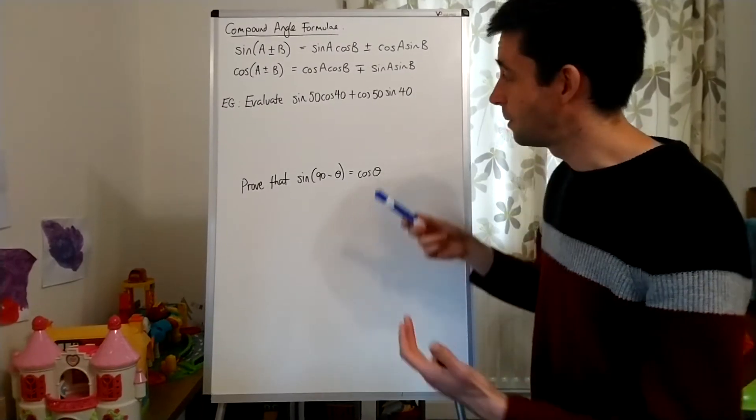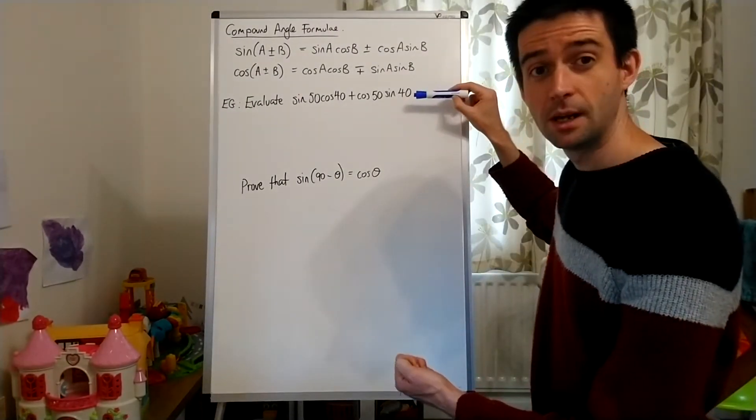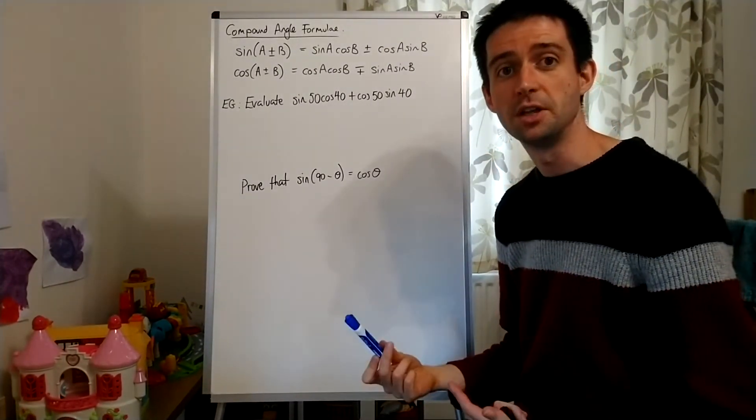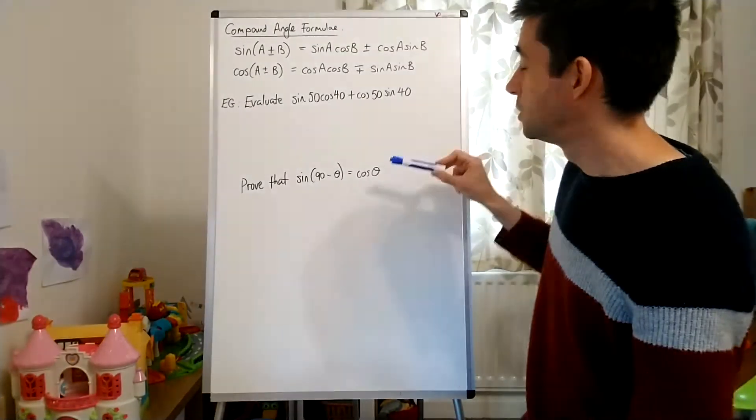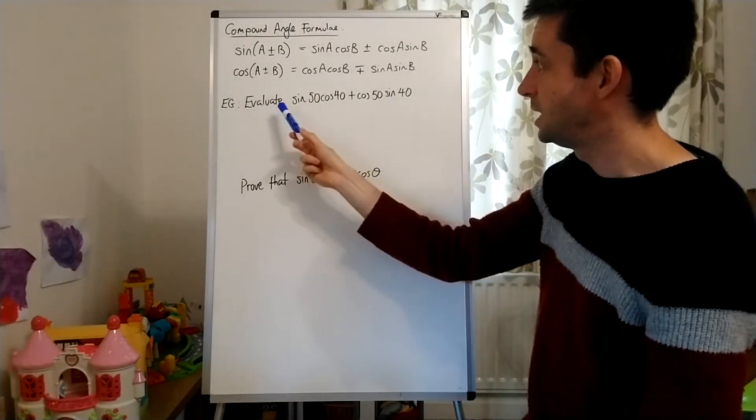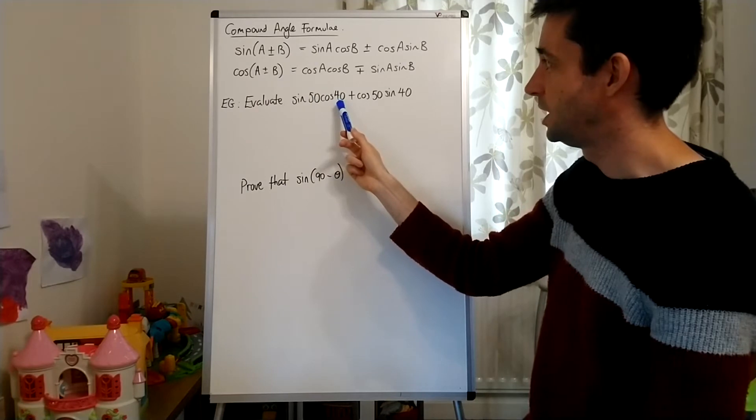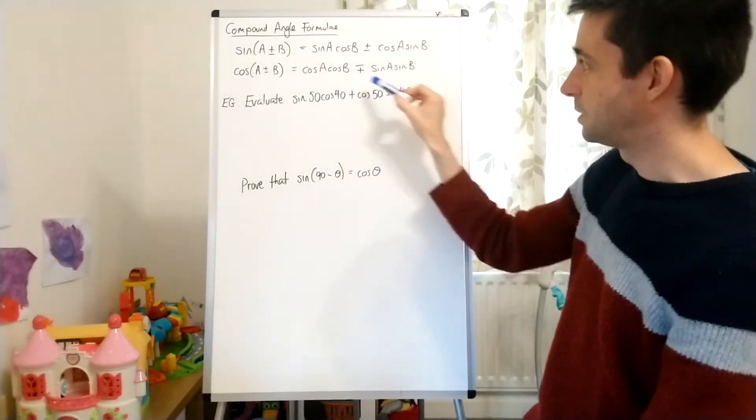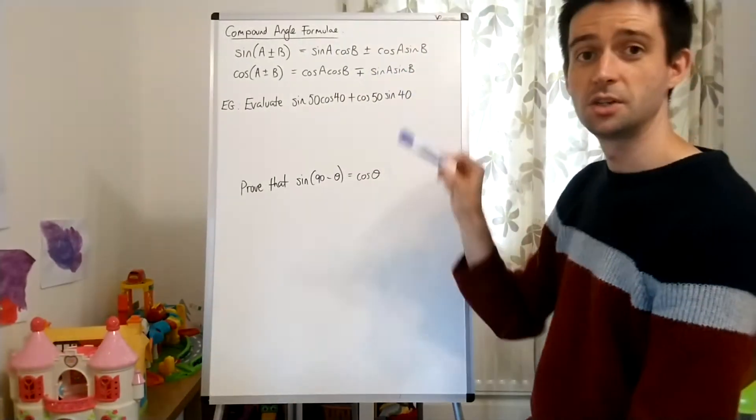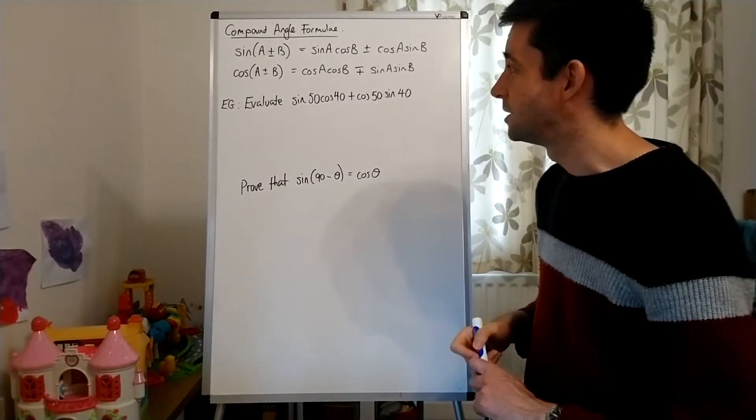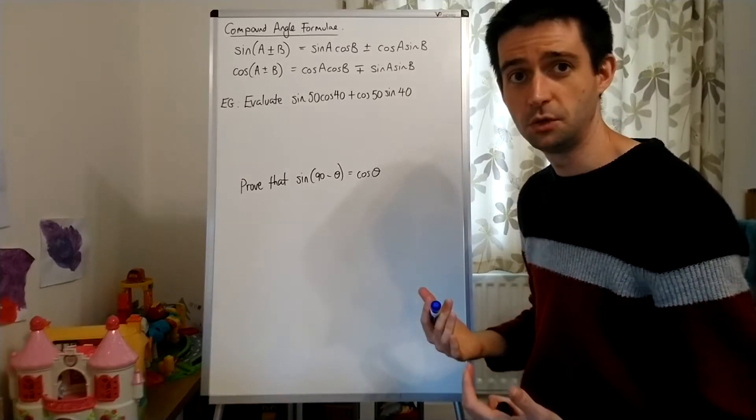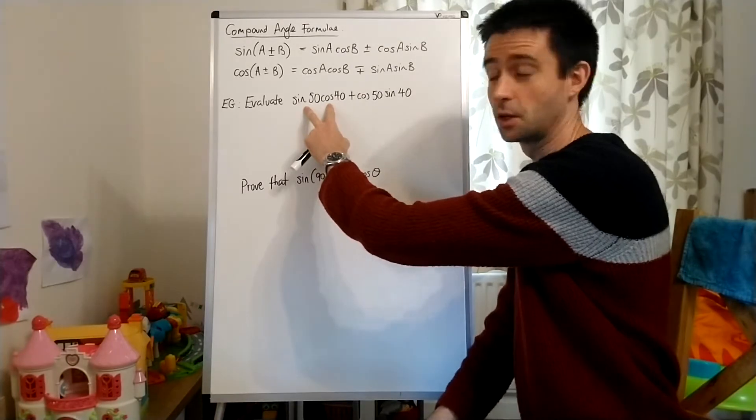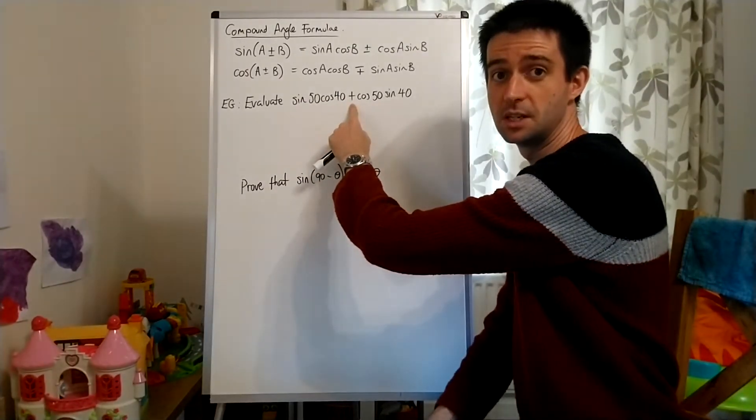So what I'm just going to do is a couple of examples. One that's an evaluation, which is finding a number, and the other that's a proof to give you an idea of how we might use these. Here we have evaluate sine 50 cos 40 plus cos 50 sine 40. You can see how this looks like one of the expansions that we've got on the right-hand side. To enable us to decide which one, we need to look at the order of the sines and the cos's, and the sign in between the expansion.